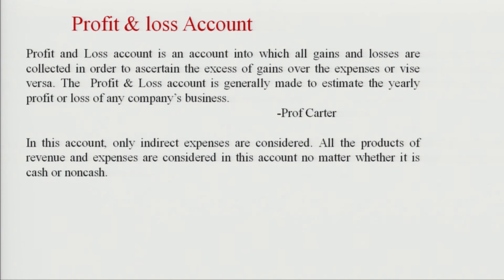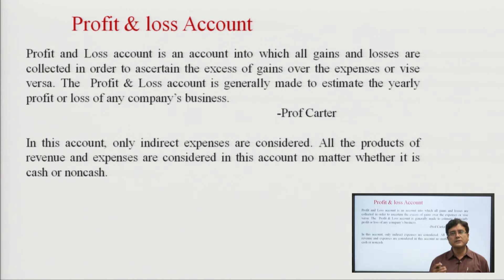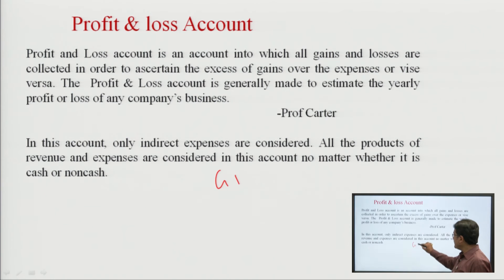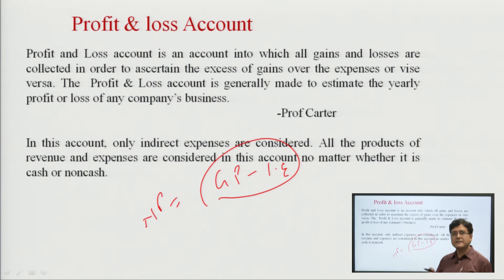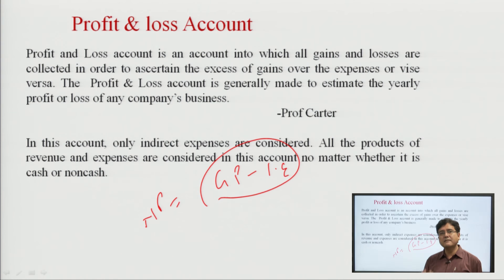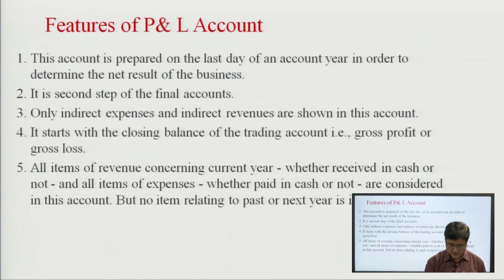The profit and loss account is generated to find out the net profit after gross profit. It is calculated as: gross profit minus indirect expenses equals net profit. Indirect expenses are expenses not directly related to product manufacturing, such as salary, electricity, courier charges, and telephone expenses. These expenses are deducted from the gross profit to arrive at net profit, which is available in the profit and loss account. This is the second step of the final accounts, and all indirect expenses are available here.